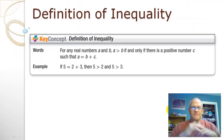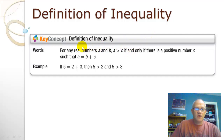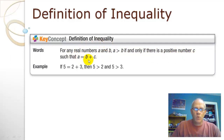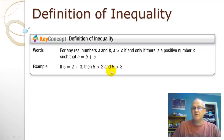First, the definition of inequality. For any real numbers A and B, A is greater than B if and only if there's a positive number C such that A equals B plus C. Here's what that means: if you know that 5 equals 2 plus 3, then 5 has to be greater than 2 and 5 has to be greater than 3. If two things add together to equal some other number, that other number has to be greater than both of those.